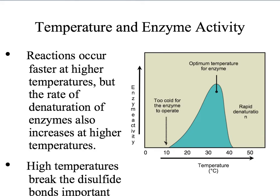The first factor we'll look at is temperature. You can see that this might be different for different enzymes, but a lot of enzymes are going to peak around the mid-30s. In theory, you would probably expect this graph to just take off, because the way we tend to think of chemical reactions is collision theory — the more energy the particles have, the faster they collide, and therefore the more reactions you have.